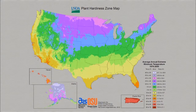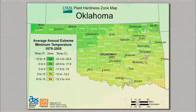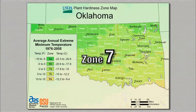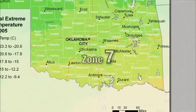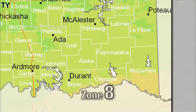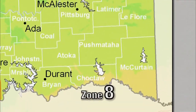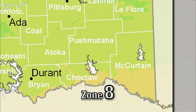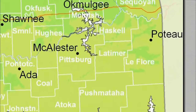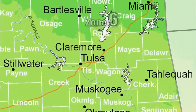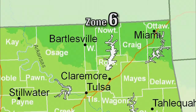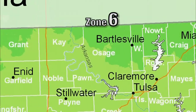In Oklahoma, most of the state falls within Zone 7, with an average minimum temperature between 0 and 10 degrees Fahrenheit. In the far southeast corner of the state, the Hardiness Zone is Zone 8, and in the northern edge as well as the Panhandle, that falls within Zone 6.